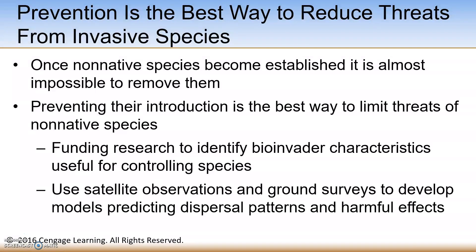Prevention is the best way to reduce threats from invasive species. Once non-native species become established, it's almost impossible to remove them — as illustrated by the zebra mussel's spread across the Mississippi River watershed. The best approach is to prevent their introduction in the first place, provide funding to research bio-invader characteristics, use satellite observations and ground surveys to predict dispersal patterns, and on an international level, identify harmful invader species and establish treaties that ban their transfer from one country to another.